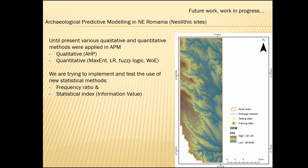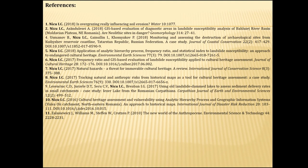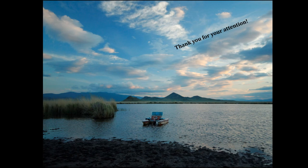As future work in progress, we are trying to develop archaeological predictive modeling in northeastern Romania for Neolithic sites. Until now, various qualitative and quantitative methods have been applied in archaeological predictive modeling, including analytical hierarchy process, maximum entropy, and logistic regression. We are trying to implement and test new statistical methods — specifically frequency ratio and statistical index. This is still work in progress; we have gathered the data and hope to present results at a future conference.